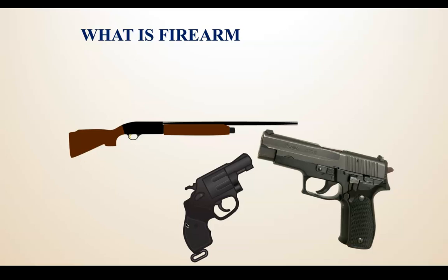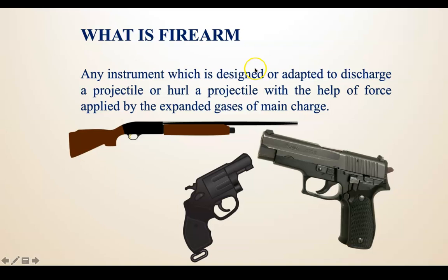What is a firearm? A firearm is any instrument designed or adapted to discharge a projectile. The basic requirement is that the force discharging the projectile must be generated by expanding gases as the main charge. For example, when an explosive burns and gases expand, the force is exerted onto the projectile, hurling it out of the instrument — that instrument is a firearm.